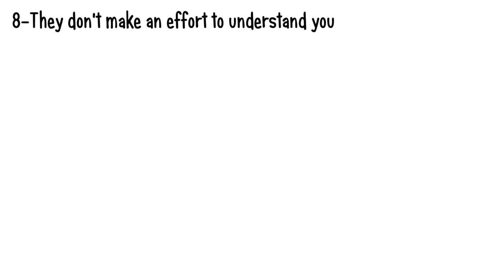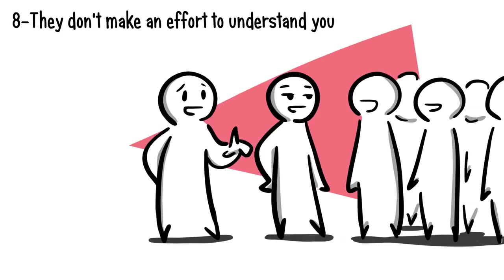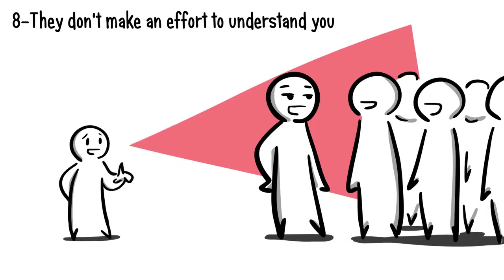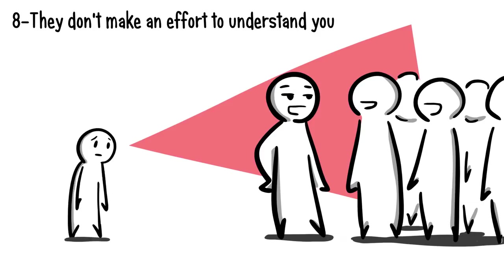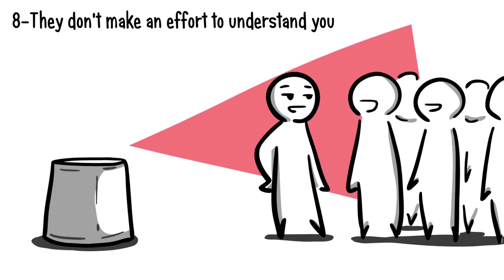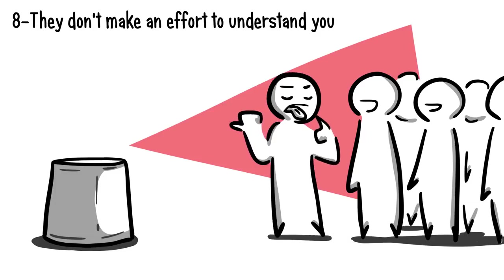Number eight: They don't make an effort to understand you. Feeling misunderstood can be a rather alienating experience. So when someone dislikes you, they won't want to provide support to your ideas and values. Instead, they'll make you feel invisible, unheard, and will dismiss your thoughts, whether it's done subtly or explicitly. One-upping is another strategy they use to control the conversation instead of allowing you to give your own inputs.